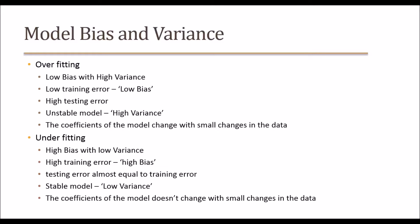Underfitting means high bias and low variance. There is already a certain bias built in while building the model itself — the training error itself is high, and testing error will definitely be even more than the training error. It's a stable model with low variance; the coefficients of the model don't change. But what is the real use of that if the training error itself is really high?